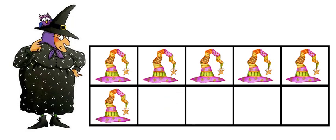How many hats are there now? One, two, three, four, five, six. Or we could say five, six. And we can look at the tens frame and just say there's six hats. We know that there are four empty frames.